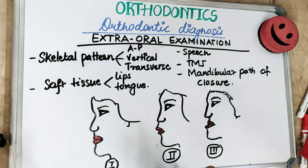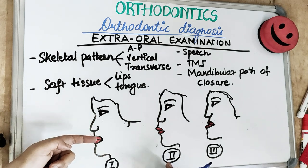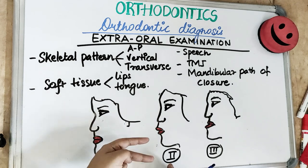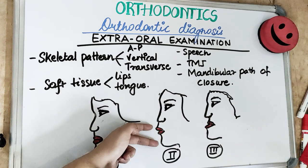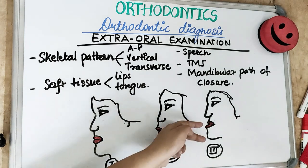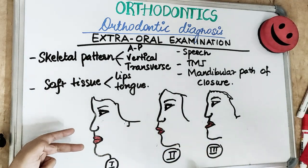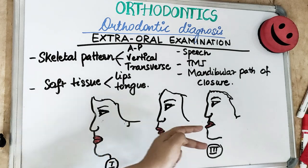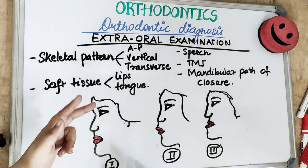For the anterior-posterior jaw relationship assessment, you can use either your fingers or a stick. With the finger method, place your index finger at Point A and your middle finger at Point B. For a Class 2 patient, the hand points upward. For a Class 3 patient, the hand points downward. For a Class 1 relationship, the hand is at an even position.